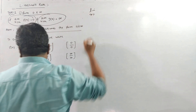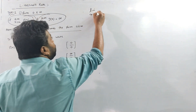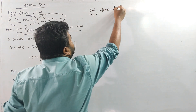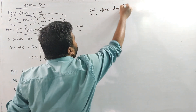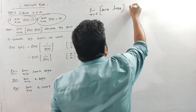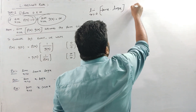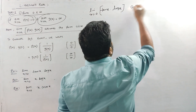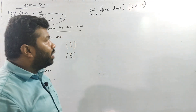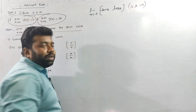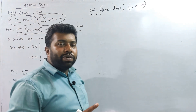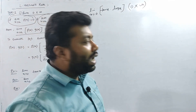Consider the limit as x tends to 0 of tan(x)·log(x). Here, tan(0) equals 0 and log(0) tends to negative infinity, so this is a 0×Infinite form. We cannot directly apply L'Hôpital's rule — it requires either 0/0 or ∞/∞ form.